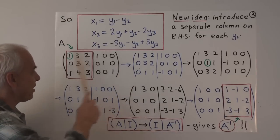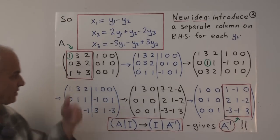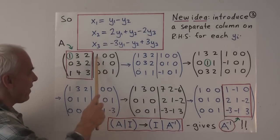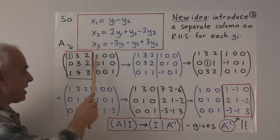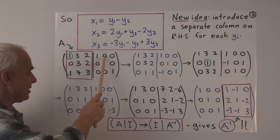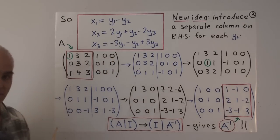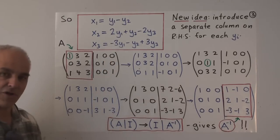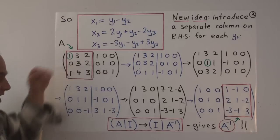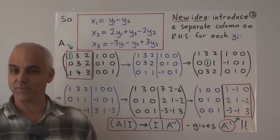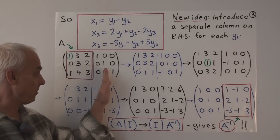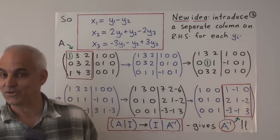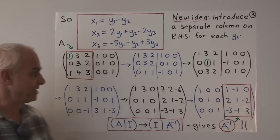This is a redoing of that problem in terms of these more expanded augmented matrices. This matrix here replaces the first matrix from the previous slide. The first row, instead of having a y1, has a 1 here representing 1·y1, 0·y2, and 0·y3. This is the y1 column, this is the y2 column, and this is the y3 column. This way, we can keep track of the y1s, y2s, and y3s separately by having a column for each, which means we don't actually have to write the variables down. It's a clever little idea.